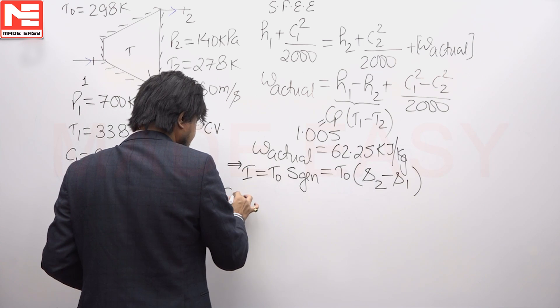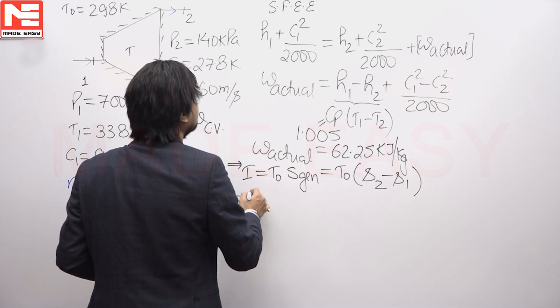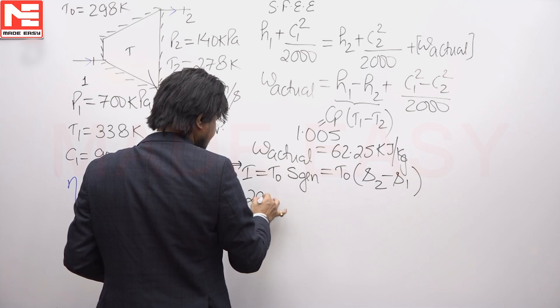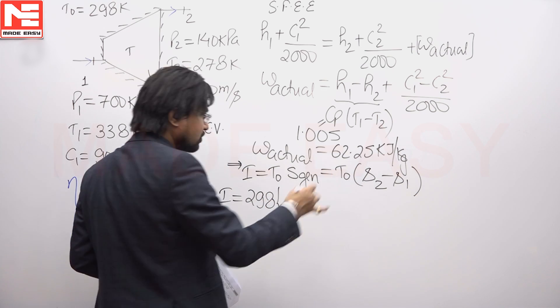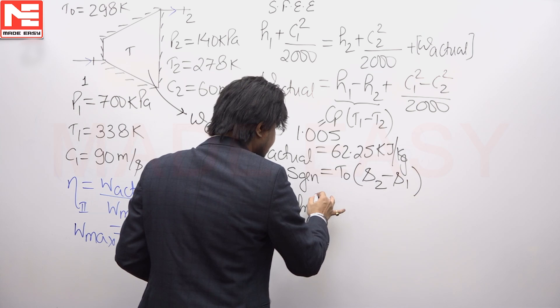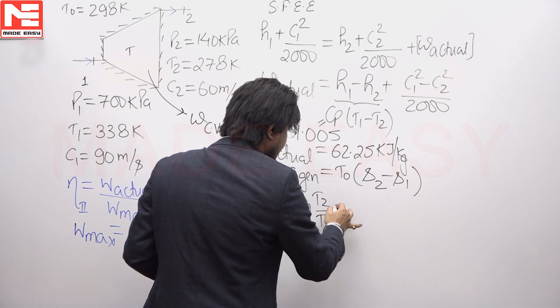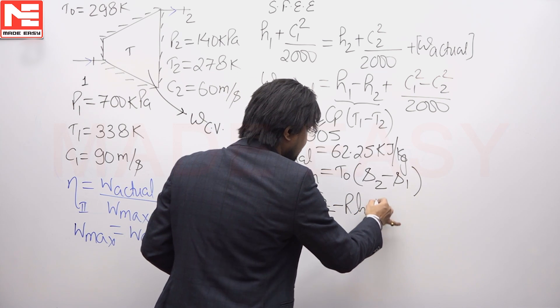I can write irreversibility equals T naught, given to us as 298. It is air, so I can use the expression Cp ln T2 by T1 minus R ln P2 by P1.